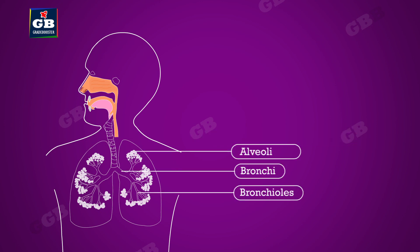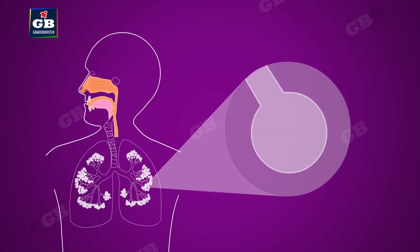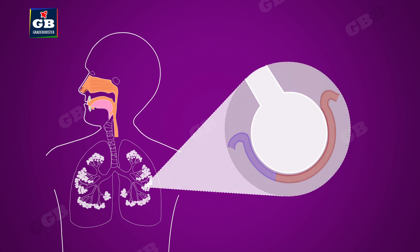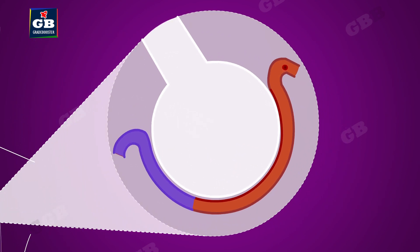The windpipe branches into bronchi, bronchioles, and finally attaches to small balloon-like structures called alveoli. The walls of the alveoli are richly supplied with blood vessels, and this is the exact site where the exchange of gases takes place in your lungs.